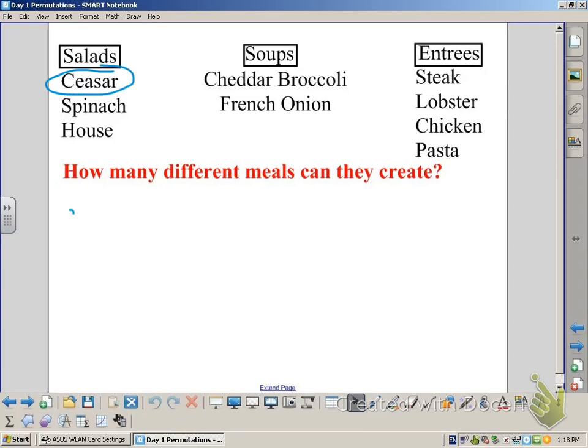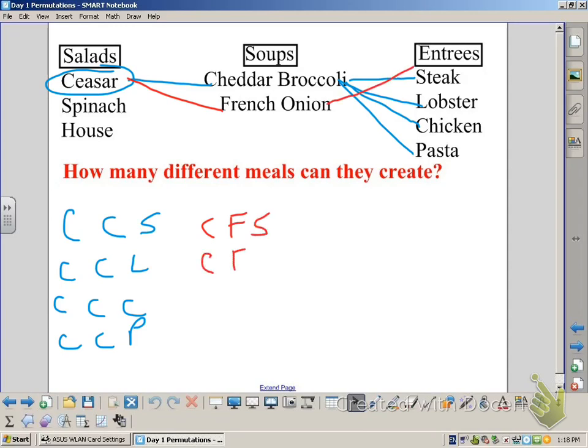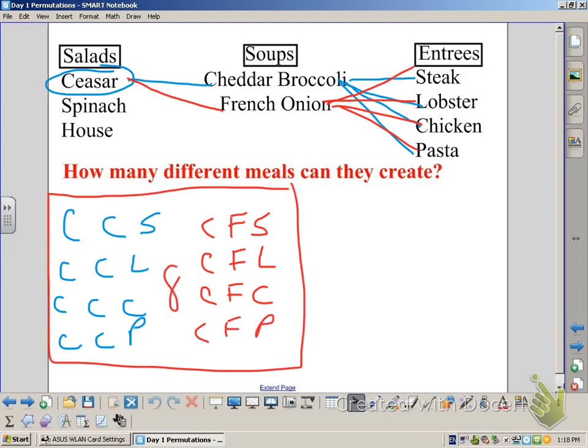If you start with a Caesar salad and pair it with the cheddar broccoli soup, and then with each of the other entrees, and then do the same thing for the French onion, we can see that each combination has eight meals. So if we do that for each of the other salads, we do come up with 24.